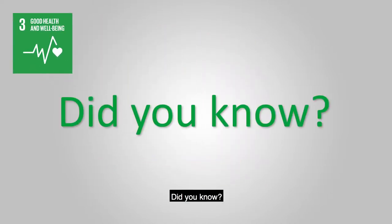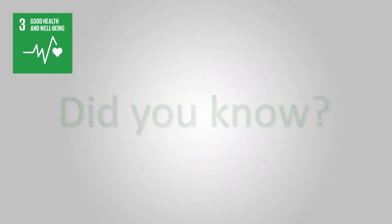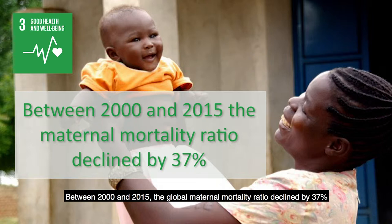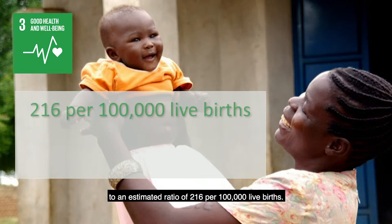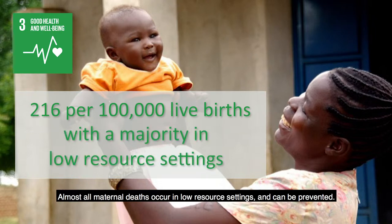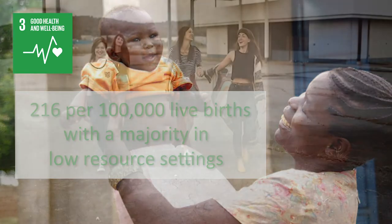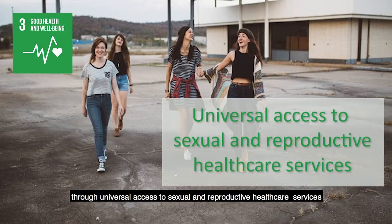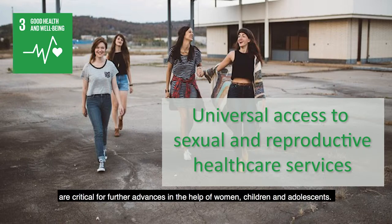Did you know between 2000 and 2015 the global maternal mortality ratio declined by 37% to an estimated ratio of 216 per 100,000 live births? Almost all maternal deaths occur in low resource settings and can be prevented. Preventing unintended pregnancy and reducing teenage pregnancies through universal access to sexual and reproductive health care services are critical to further advances in the health of women, children and adolescents.